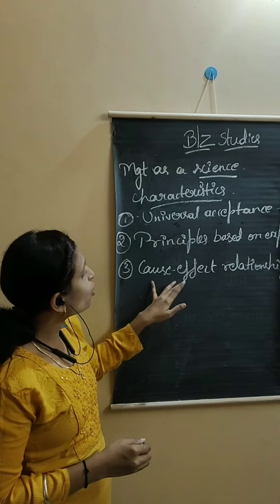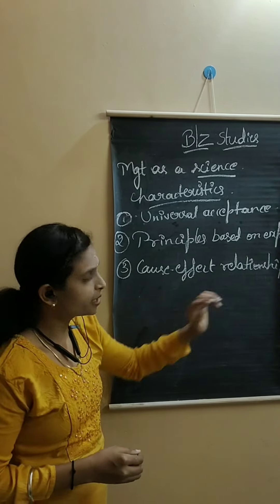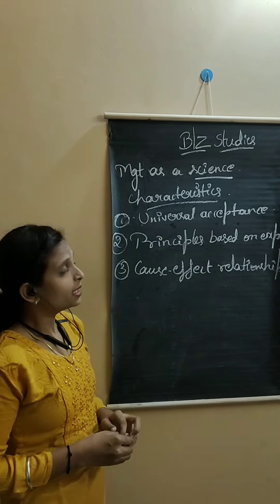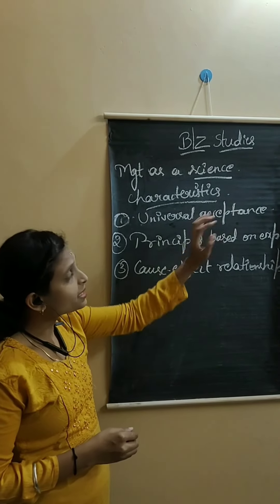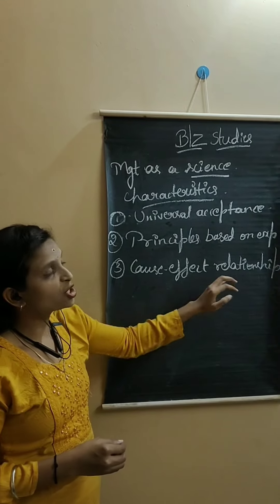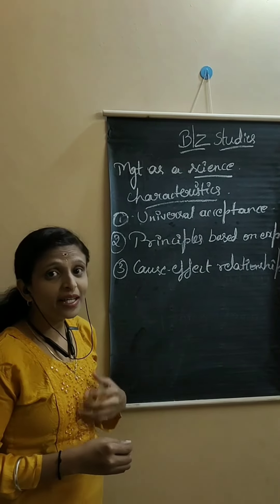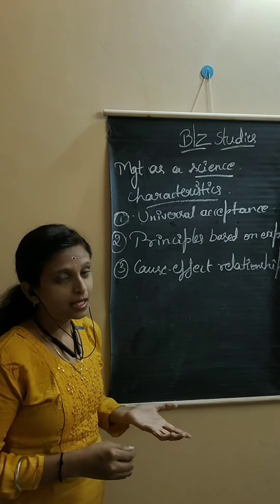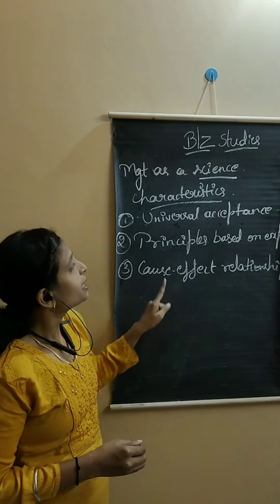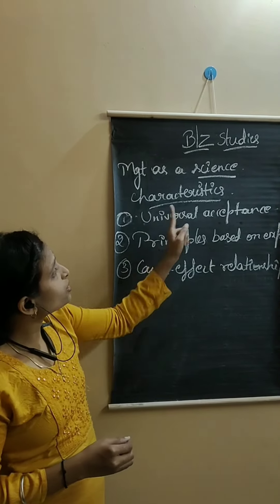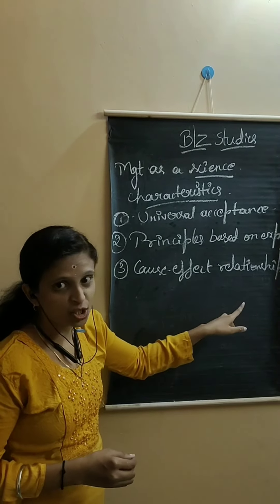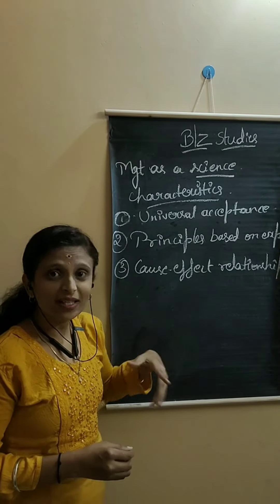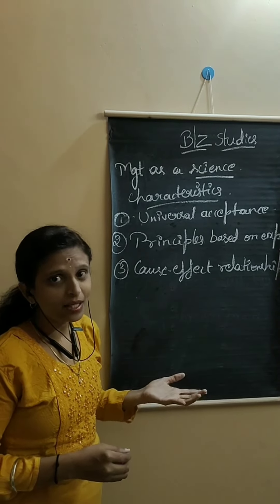And the third one is cause and effect relationship. That means principles of science develop a cause and effect relationship between the variables. Similarly, management also develops the cause and effect relationship between the variables.